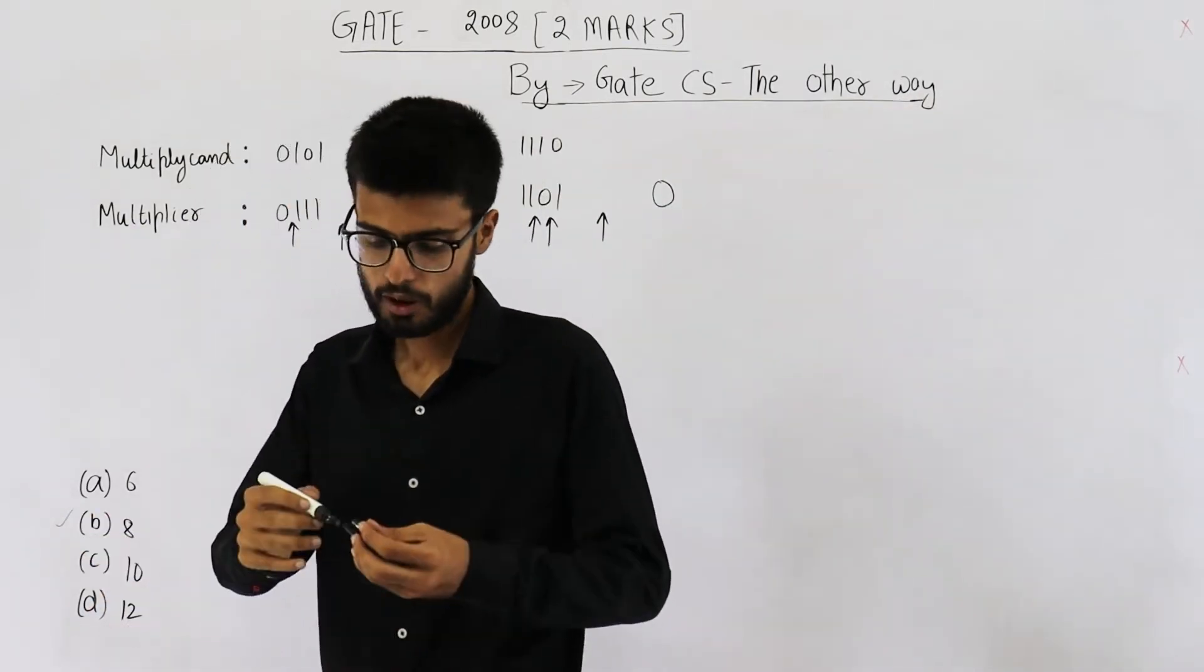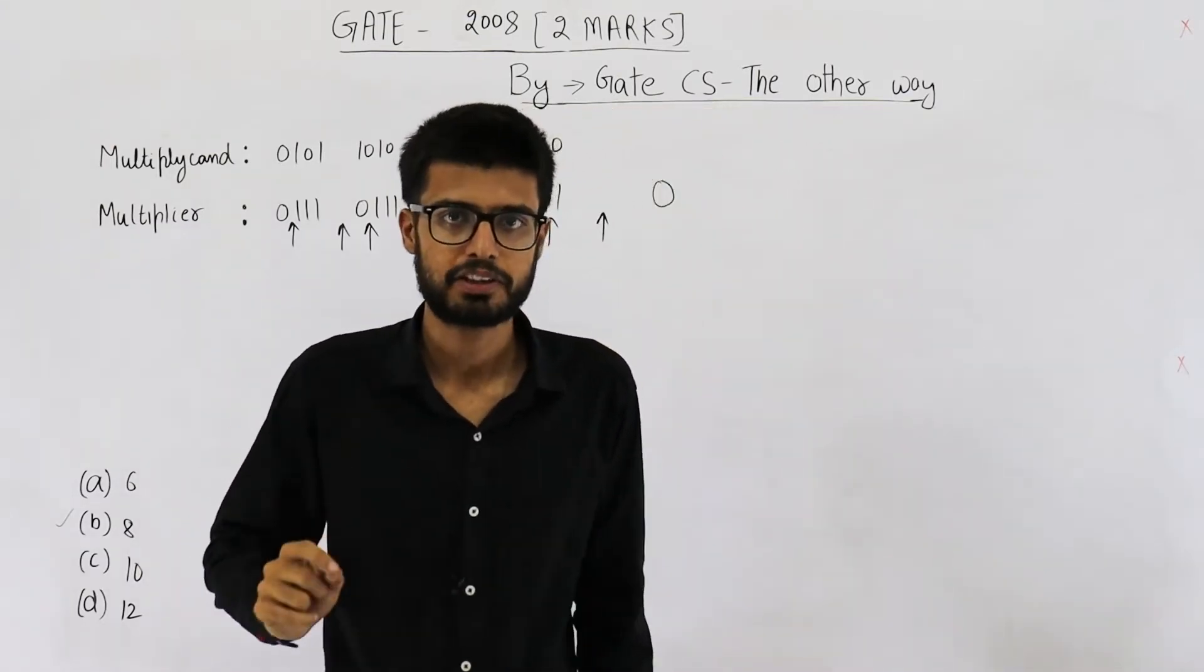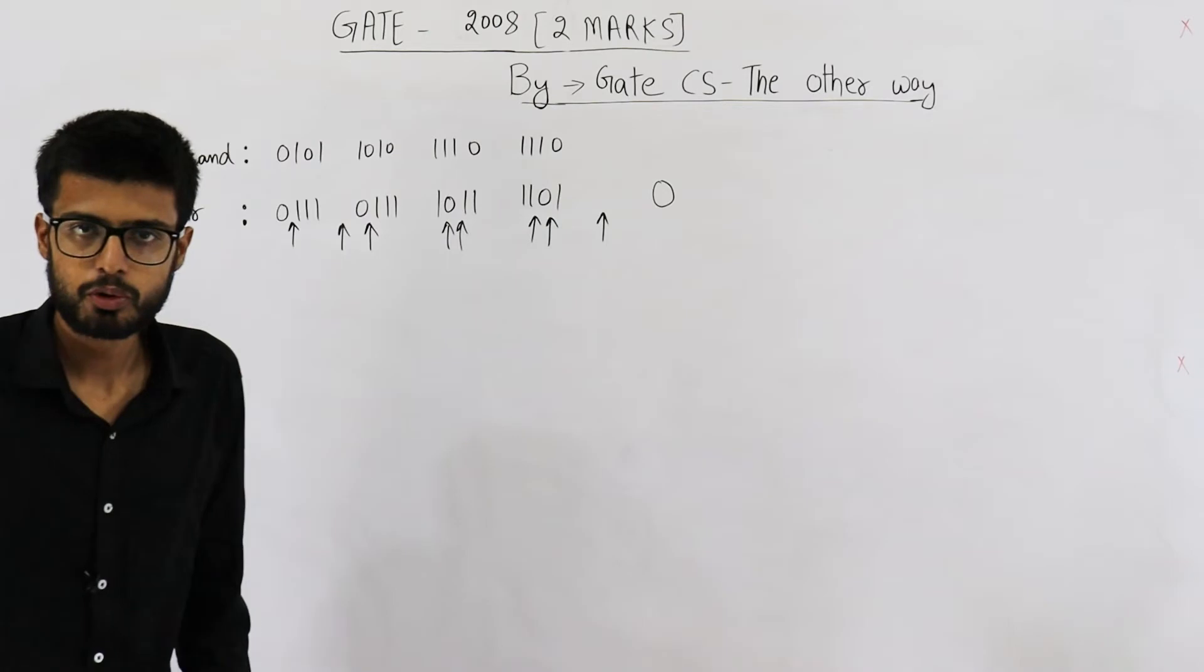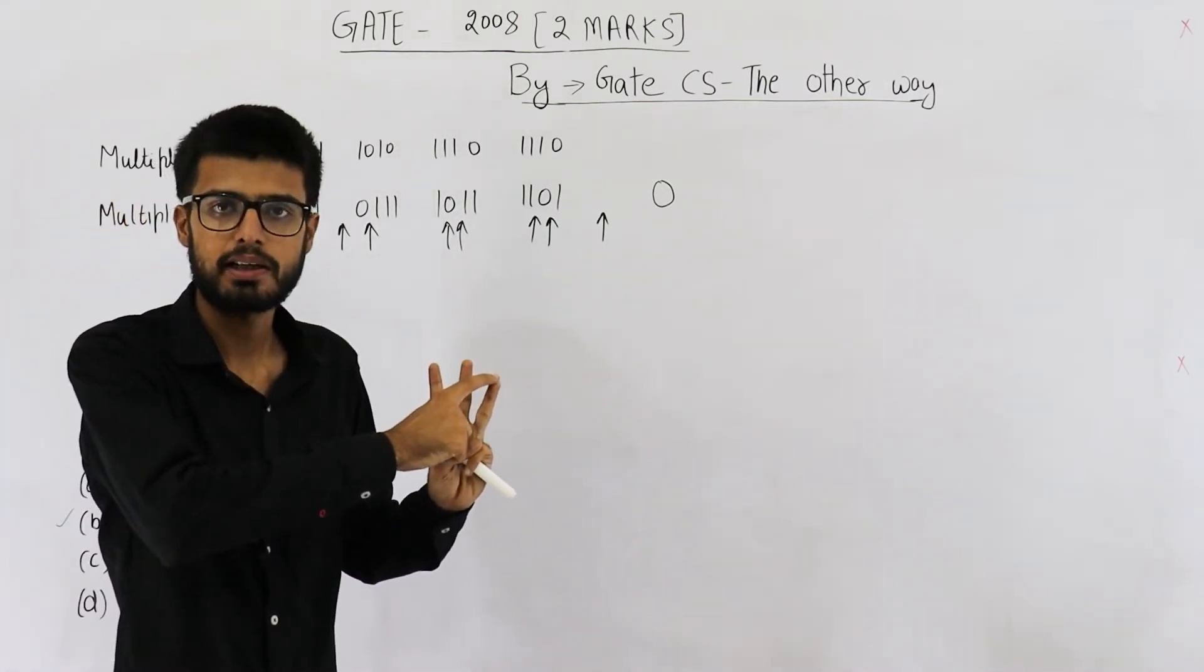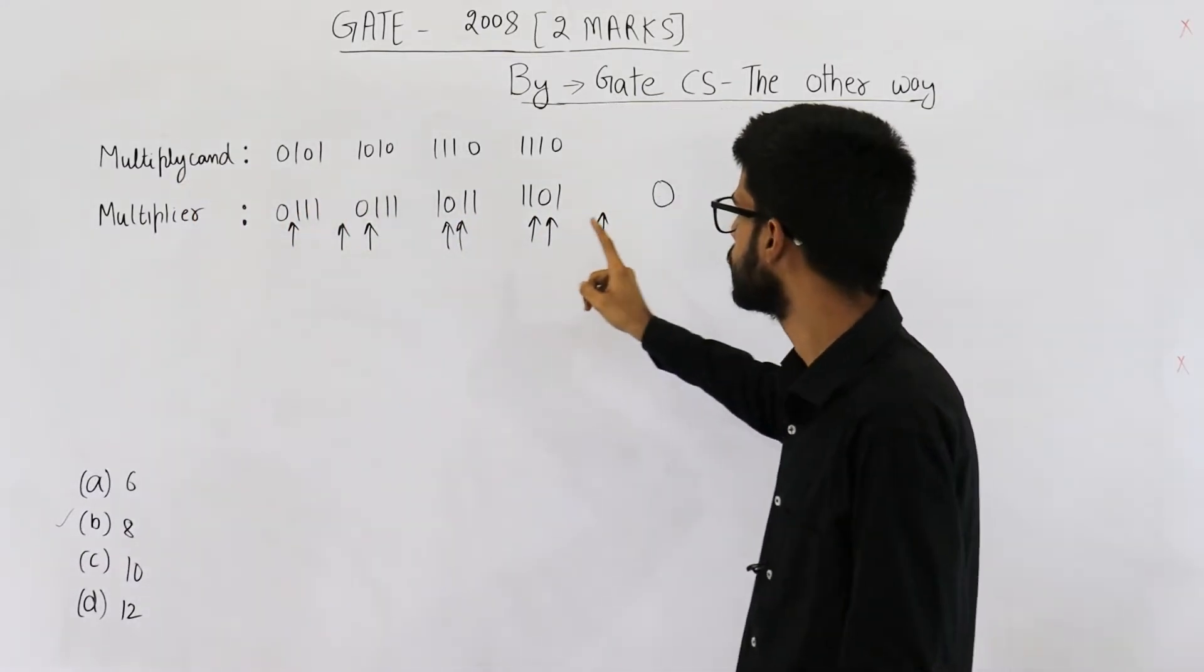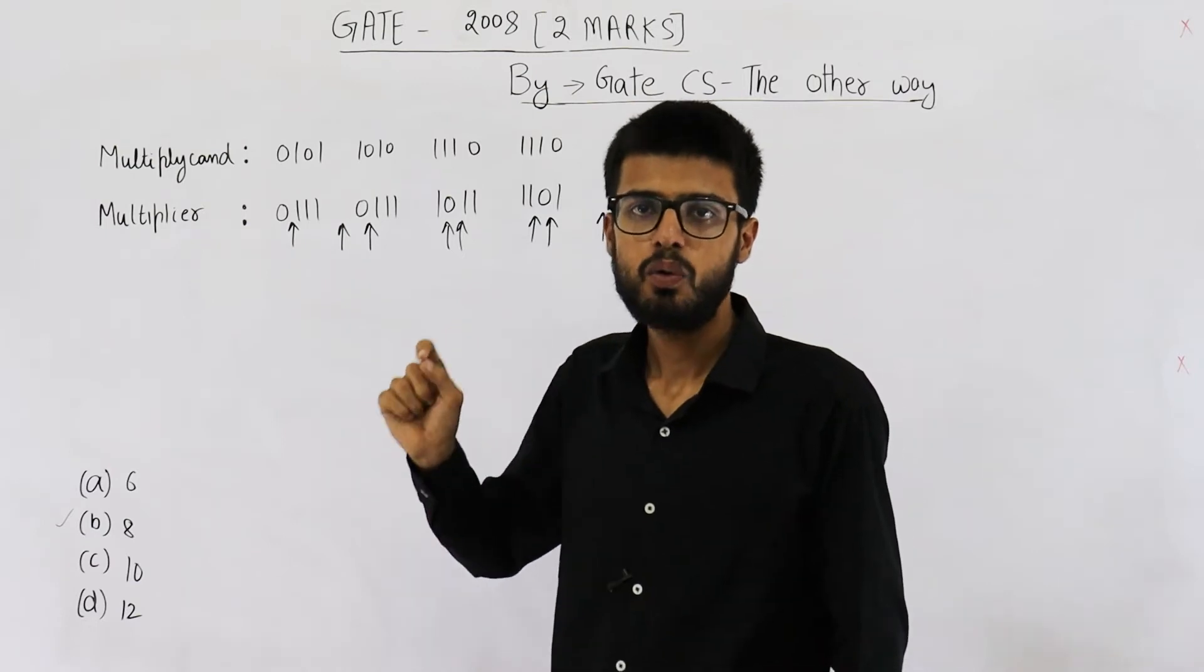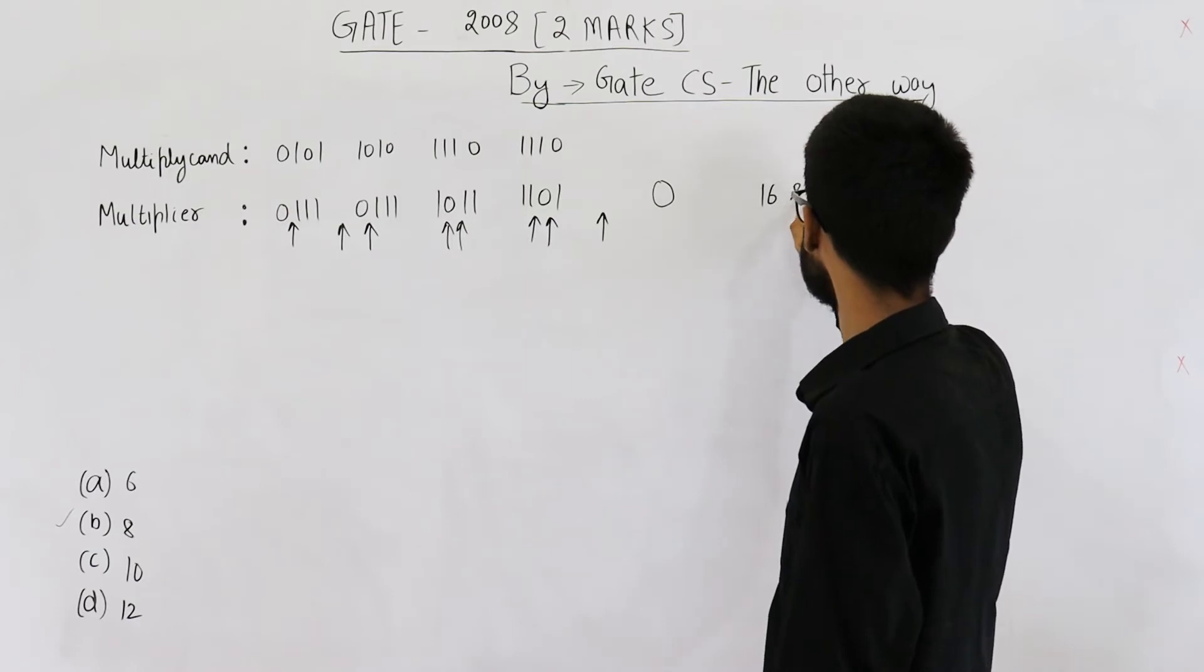What will be the total number of operations? They were asking only about additions plus subtractions. What are the total number of operations? Even though they are not asking, still let's discuss. Booth's algorithm uses three kinds of operations: shifts, add, subtract. Shifts will be equal to number of bits in multiplier. So multiplier is of 16 bits, that means we will shift 16 times. So there are 16 shifts.